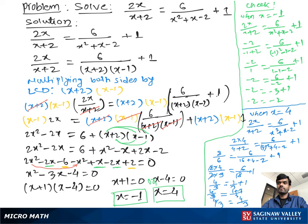The same way, when we substitute x equal to 4, we get the same result, which is 4 over 3 equal to 4 over 3. This means that both solutions are correct.